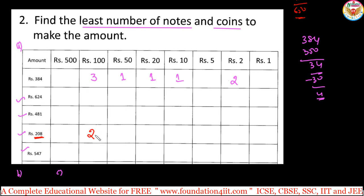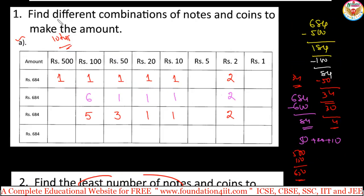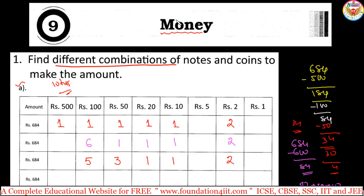For 208: directly take 2 notes of 100 rupees, giving 200. More 8 rupees needed. For 8, the least possible is 5 plus 2 plus 1. So: 1 coin of 5, 1 coin of 2, 1 coin of 1. That is 2 notes of 100 rupees and 3 coins — 5 total. In this way, the child can understand what the least number of notes and coins means, and what different combinations can be made, improving basic math skills for Grade 4 in the chapter on money.